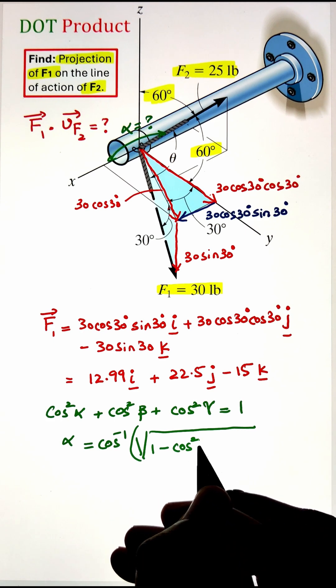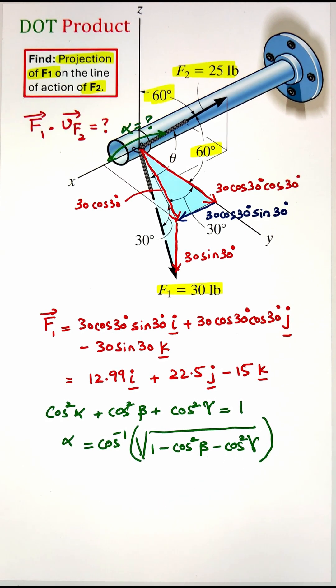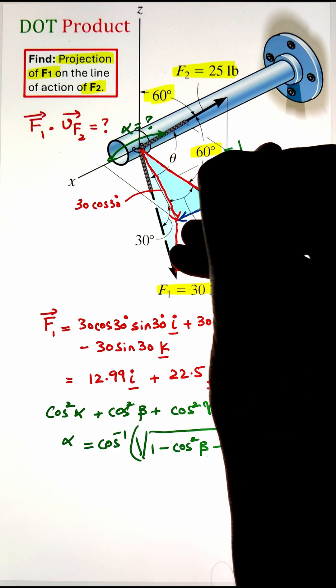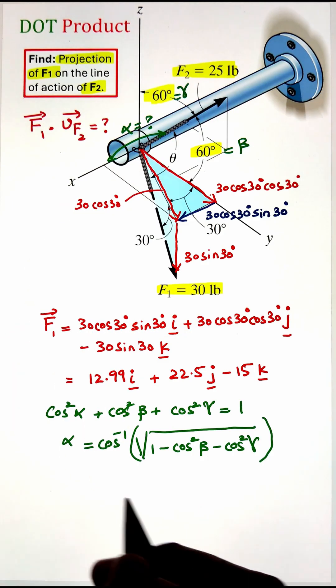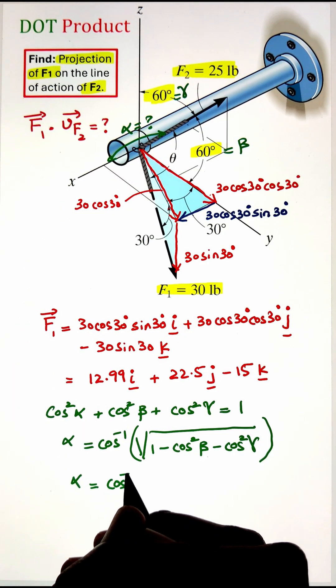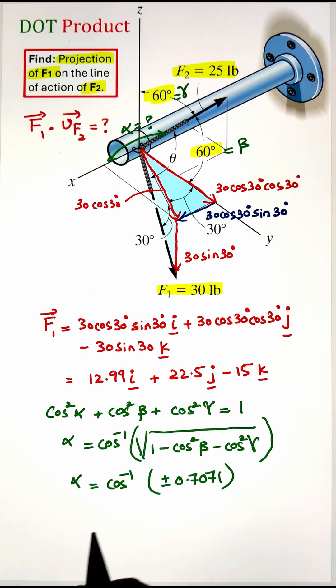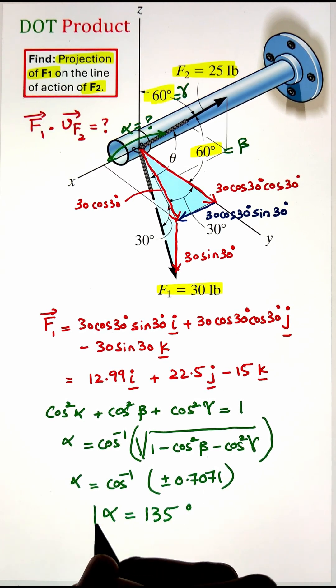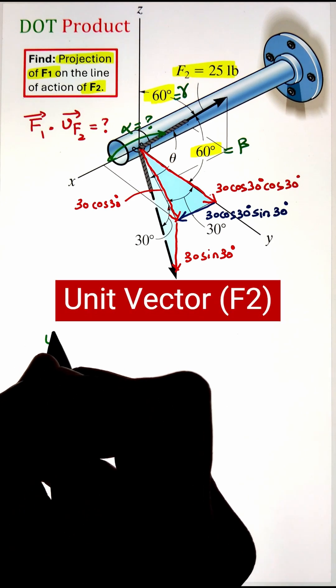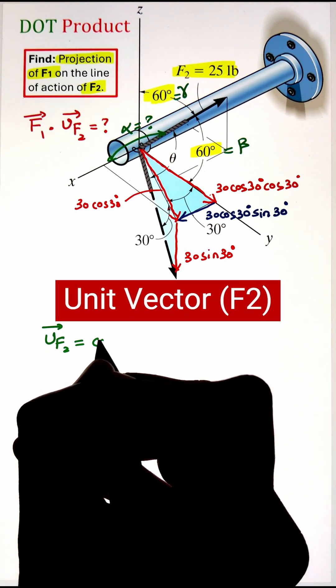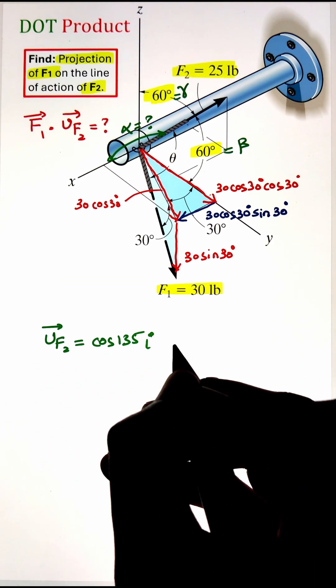As we know, cos square alpha plus cos square beta plus cos square gamma equals 1. Plugging in the value of beta and gamma equals 60, we can simplify this and get the value of alpha. Here we are going to utilize the negative 0.707 term as it is greater than 90 degrees in this case. So the value of alpha is coming as 135.